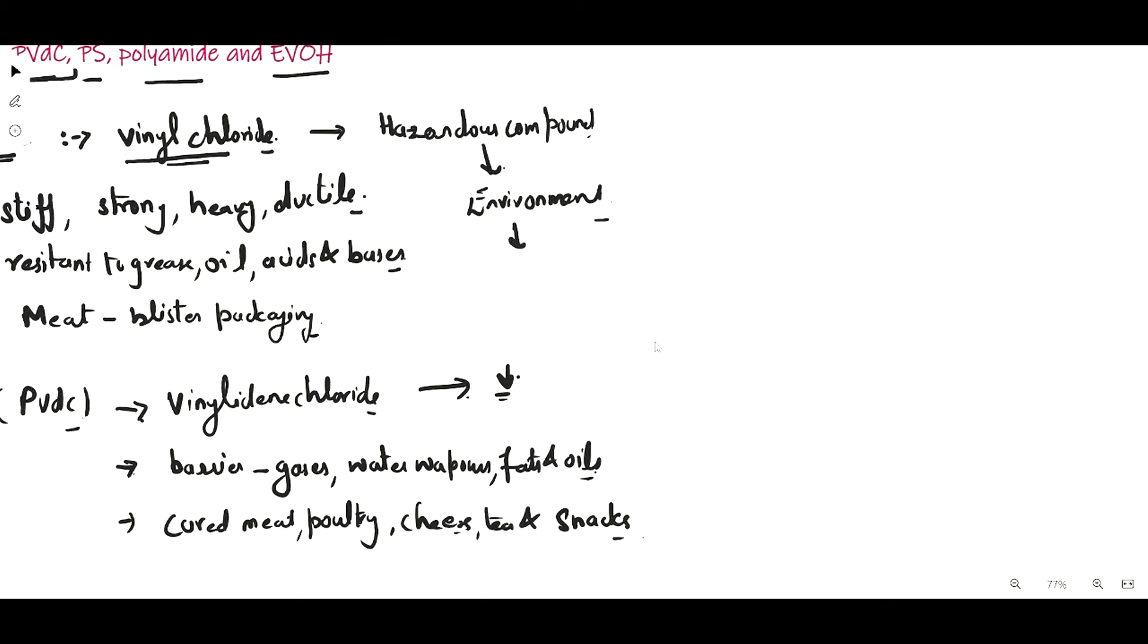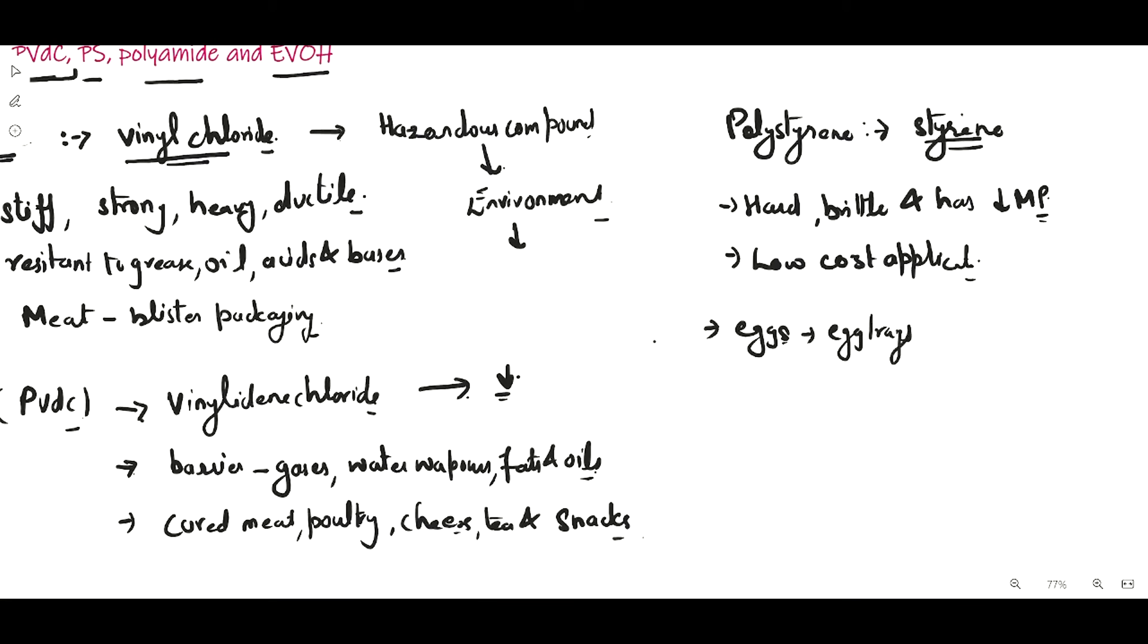Another type of packaging material is polystyrene, synthesized by the polymerization of styrene monomer. It is hard, brittle, and has a low melting point. Polystyrene is used for low-cost applications such as egg trays, cups, plates, disposable plasticware, and bottle lids.